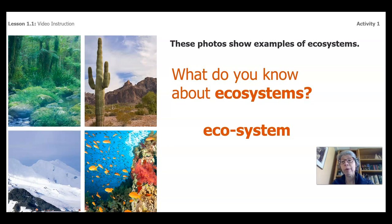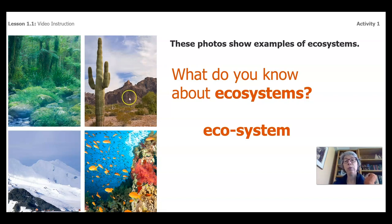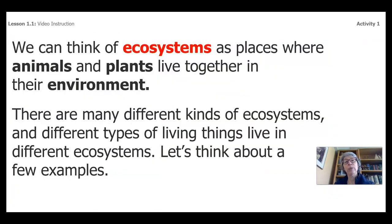What do you know about ecosystems? You may already know a lot, and some of you may not know a whole lot. I am a person that really likes to look at words, so let's take a look at this word: eco and system. A system is made up of individual parts that when you bring them together to work together, make a whole. And then you have the word eco, which is from the Greek word for house. So we can think of ecosystems as places where animals and plants live together in their environment.